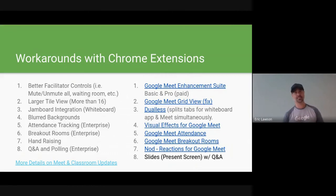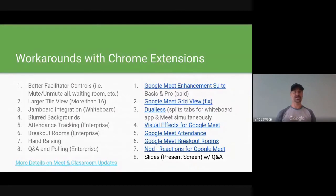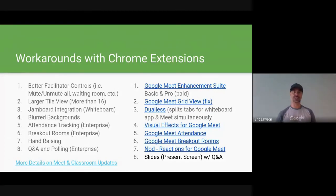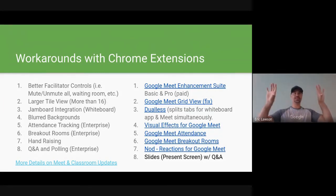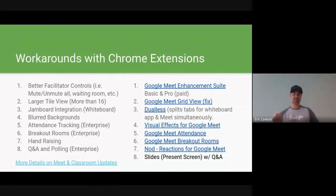Currently we have 16 tiles available, but if you need that number cranked up before the September rollout — maybe you're already in school in the south — there is a Google Chrome extension called Google Meet Grid View Fix. For Jamboard, if you just cannot wait until September, I've used the Chrome extension Dualless, which splits your tabs so you can have Jamboard on one side and Google Meet on the other, and you can still whiteboard on it.